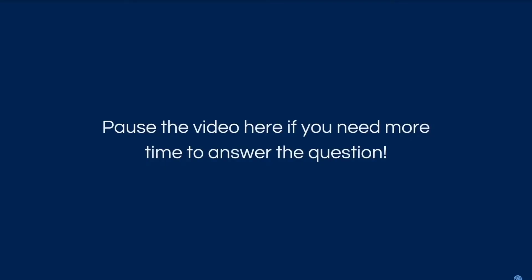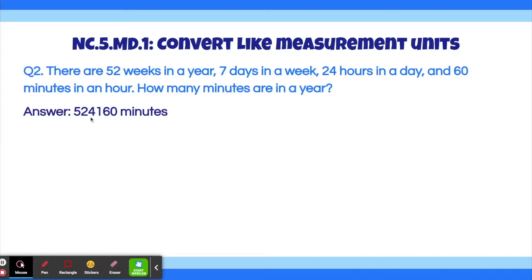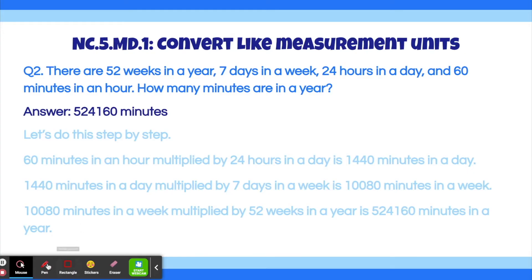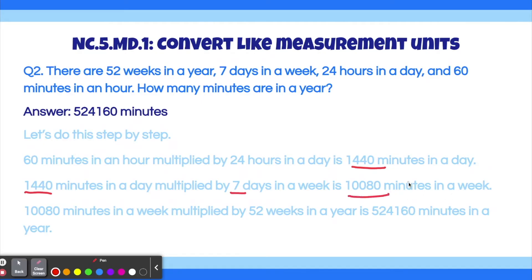The answer is 524,160 minutes. Let's do this step by step. 60 minutes in an hour multiplied by 24 hours in a day is 1,440 minutes in a day, since 60 times 24 is 1,440. 1,440 minutes in a day multiplied by 7 days in a week is 10,080 minutes in a week, since 1,440 times 7 is 10,080. 10,080 minutes in a week multiplied by 52 weeks in a year is 524,160 minutes in a year, since 10,080 times 52 is 524,160.